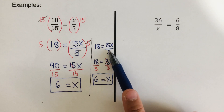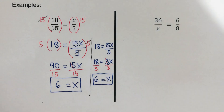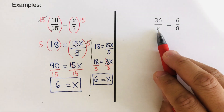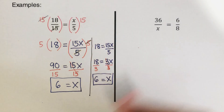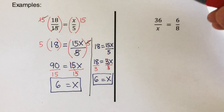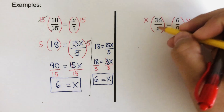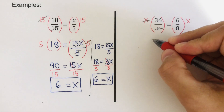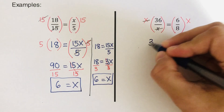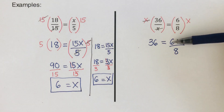Good, same answer. Now for the next problem, we need to get rid of the denominators because they tell us that division took place. We undo the division by multiplying. Multiplying both sides by x and crossing out the x, we are left with 36 on the left side, equal to 6x over 8.